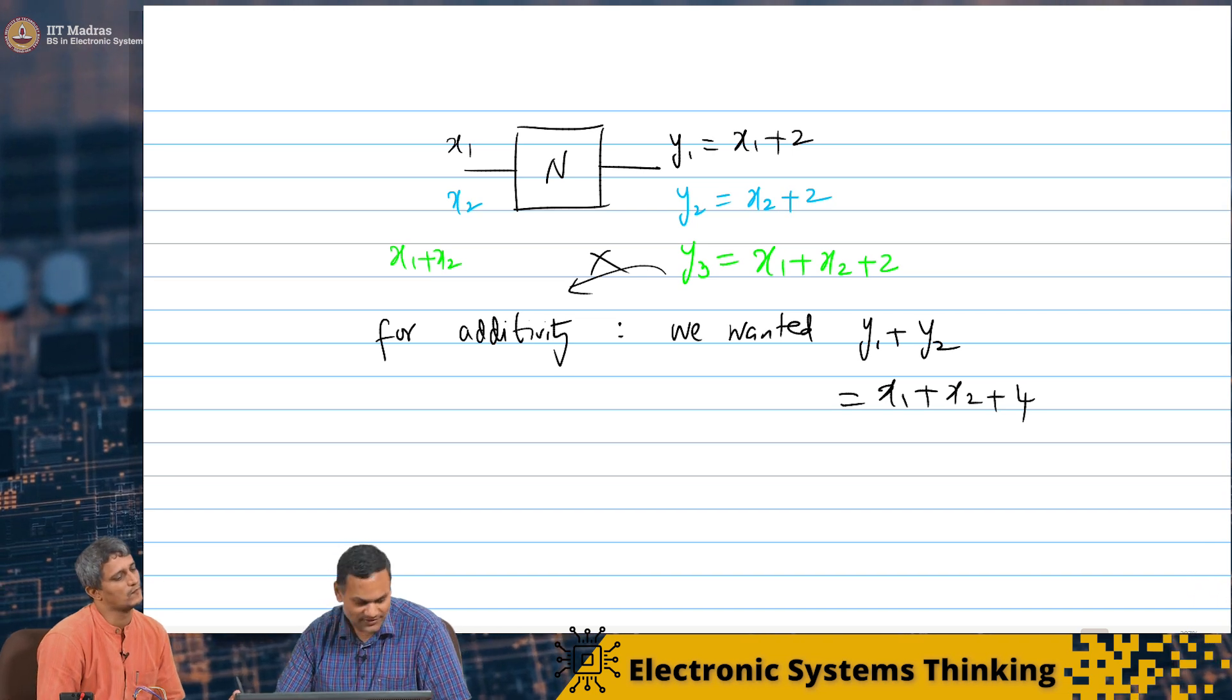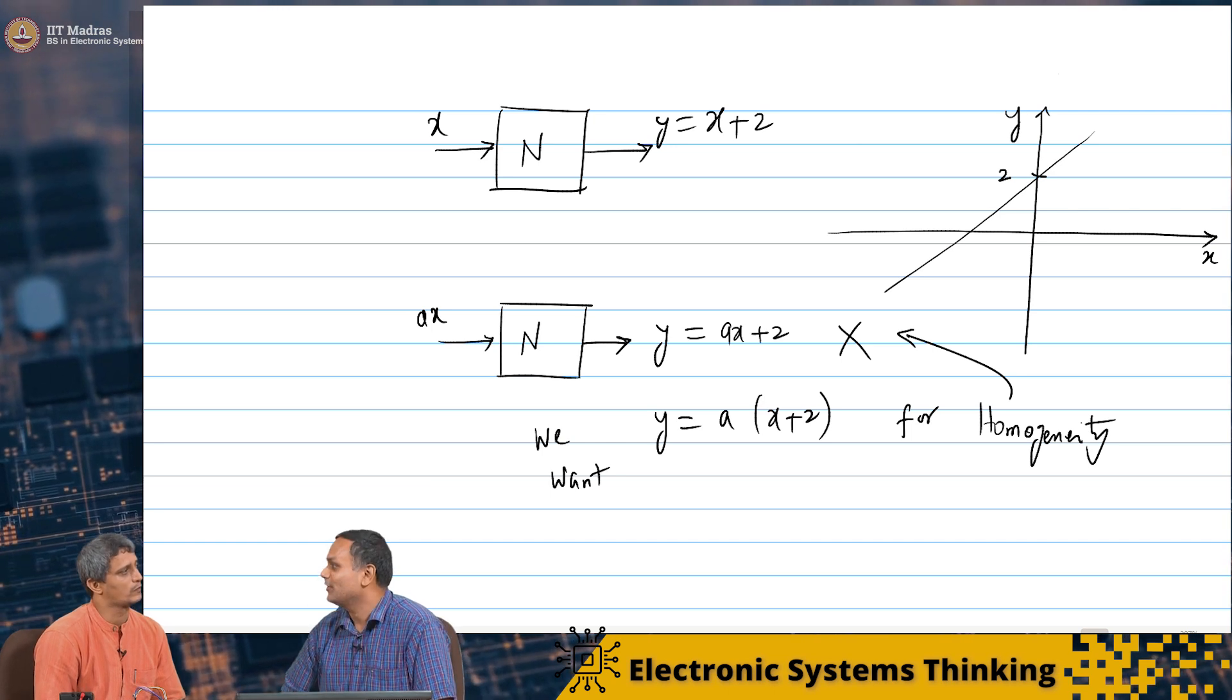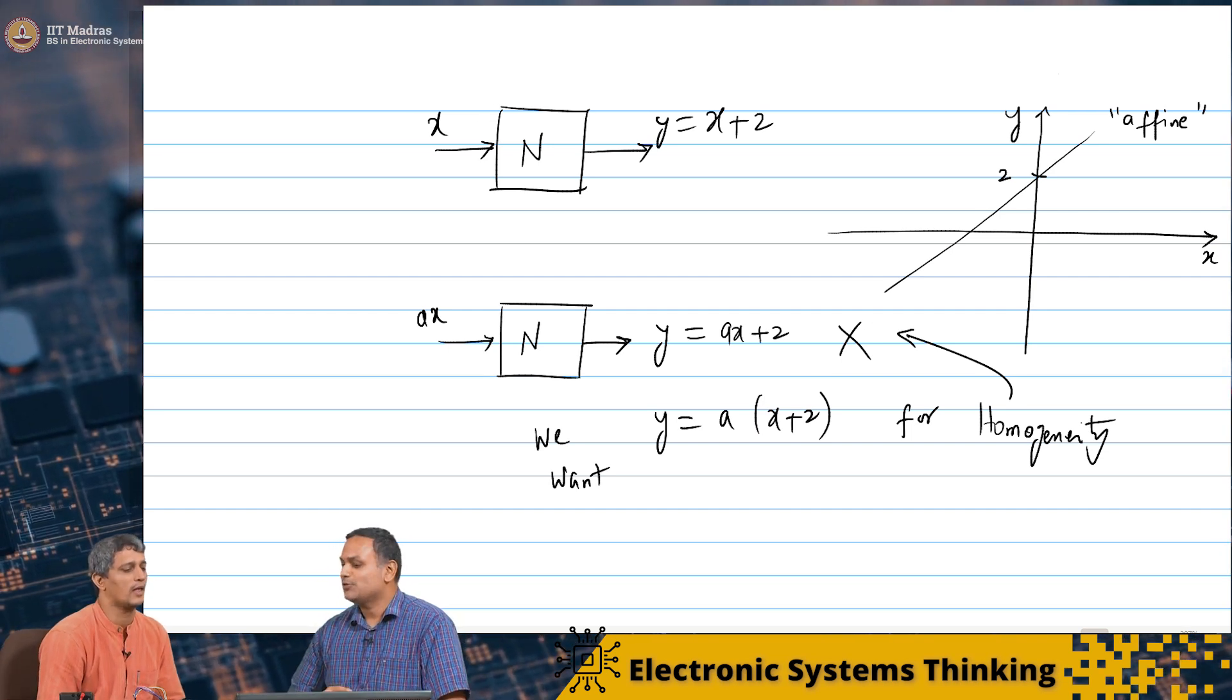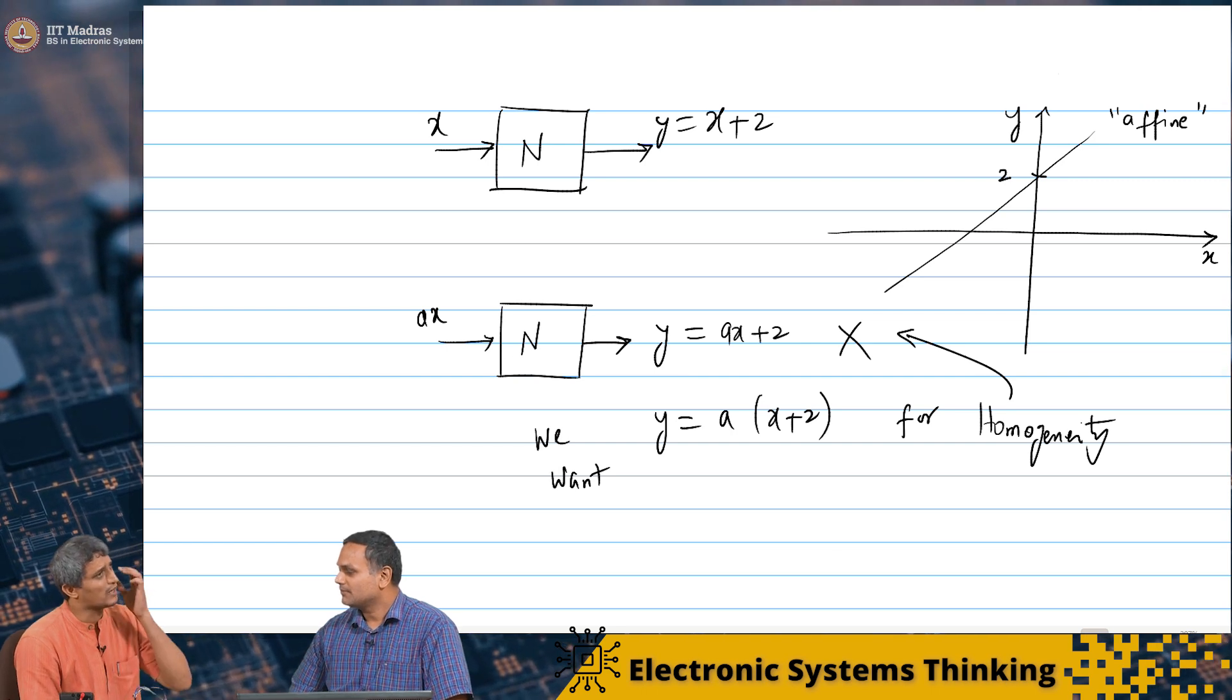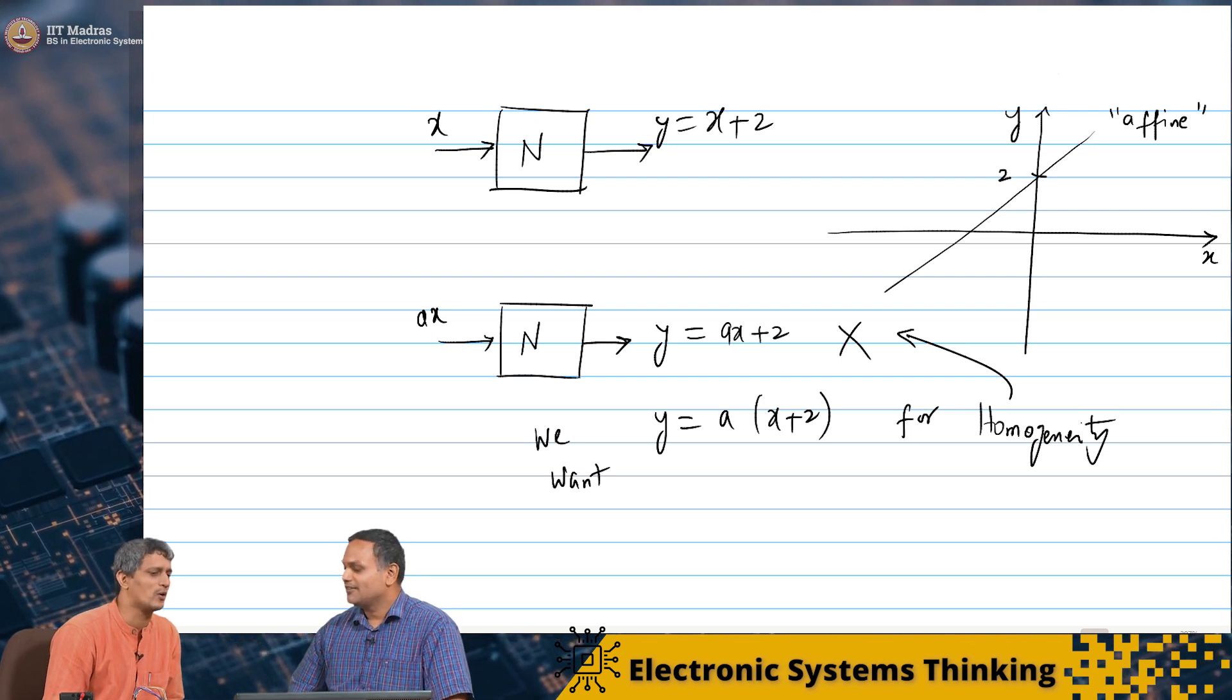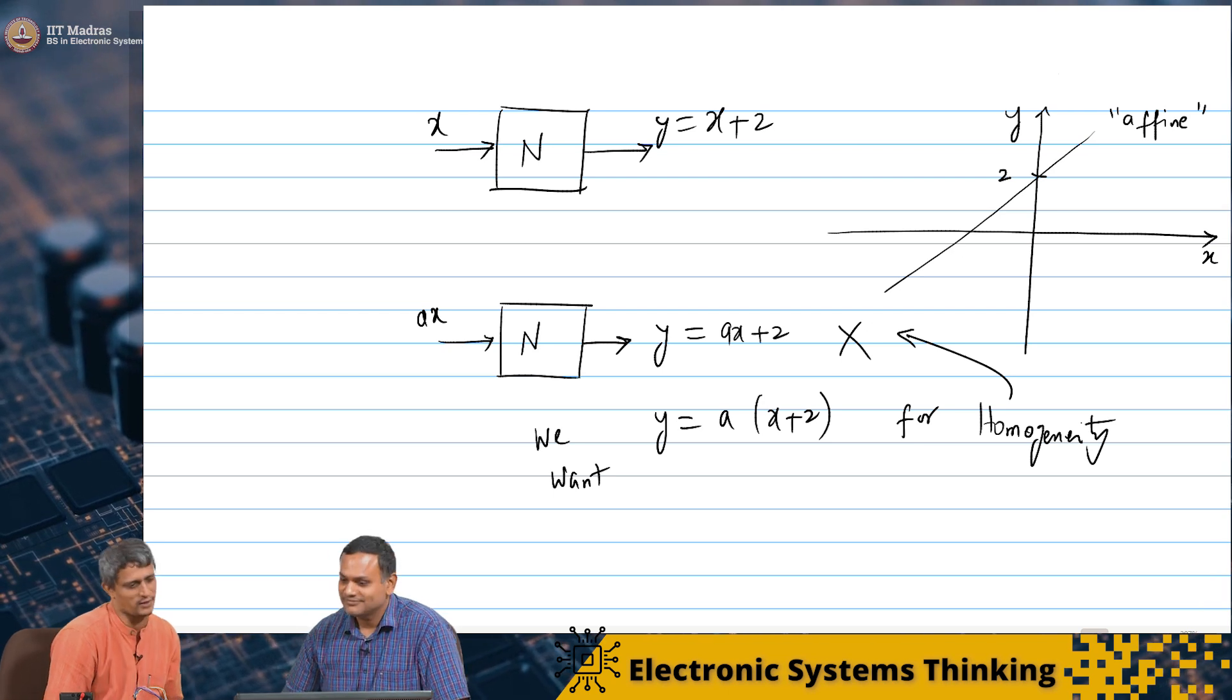In fact, networks that do not pass through the origin, there is a specific name for them. They are called affine networks. Not linear, they are called affine. Okay. You say that the characteristics are affine. Yes. So in mathematics affine is what? Ax plus b kind of? Ax plus b kind of curve, operation, right? That is right. That is why it is called an affine. Interesting.